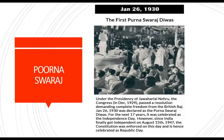The next topic is the demand for Poorna Swaraj. In December 1929, the Indian National Congress held its session at Lahore with Jawaharlal Nehru as the president. The main features of the session were: Congress passed a resolution demanding Poorna Swaraj, that is complete independence for India; boycott of central and provincial legislatures; boycott of all future elections; and the launch of the civil disobedience movement.